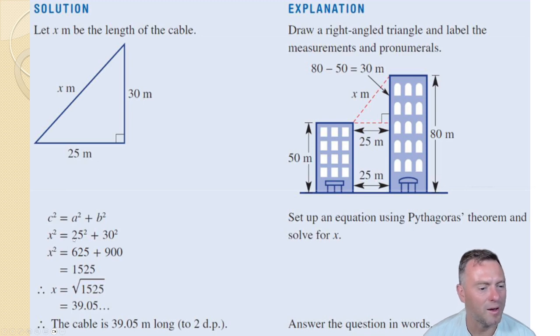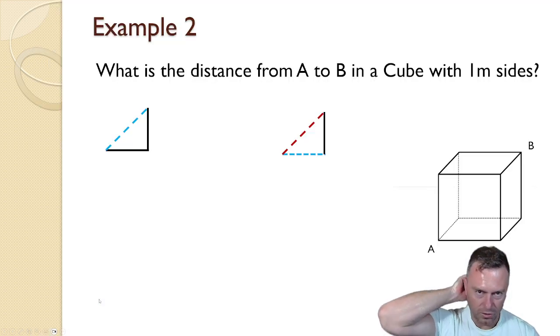So we've got a 30-25 triangle. We substitute the values in so we've got x squared is equal to 25 squared plus 30 squared which equals 1525, and then to find the actual value we square root that which gives us 39.05.